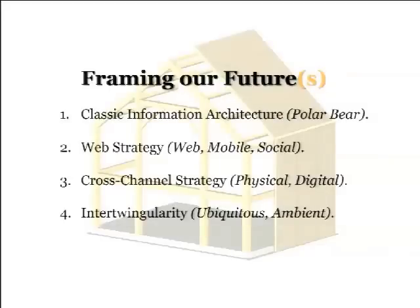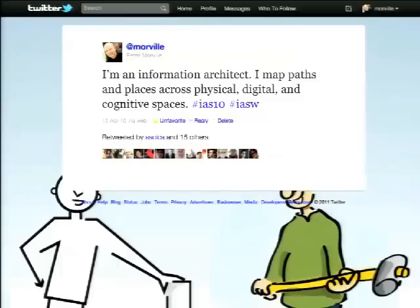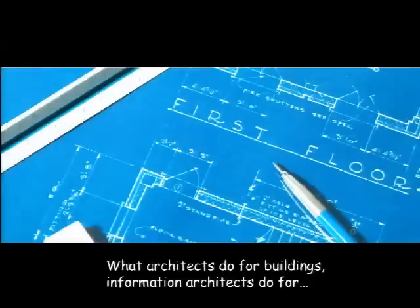My basic argument is all of these futures of information architecture already exist today, and it's a wonderful set of opportunities. We need to keep redefining or reframing what we do to stay flexible. I use this phrase for myself: I'm an information architect — I map paths and places across physical, digital, and cognitive spaces. That helps me stay expansive, but it's not really useful for most people. For explaining what we do, it's often best to go back to the beginning, back to the basics: what architects do for buildings, information architects do for — and you fill in the blank.